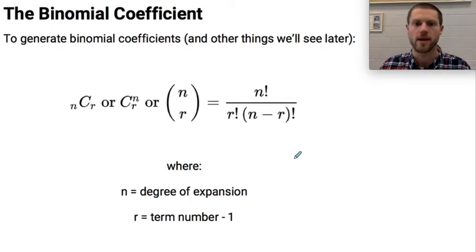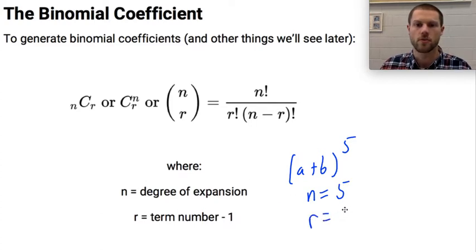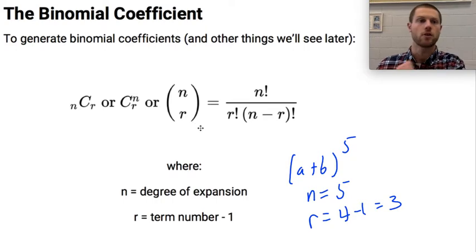So what do I mean by that? If I wanted to expand a plus b to the fifth power and I wanted to know what the fourth term is, then n would be equal to 5 since that's the degree of the expansion, and r would be equal to 4 minus 1, which is equal to 3. So we use this equation to help us generate those binomial coefficients rather than go to Pascal's triangle every time.